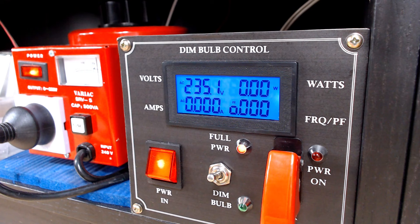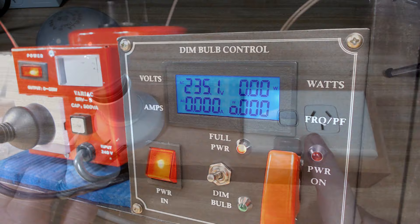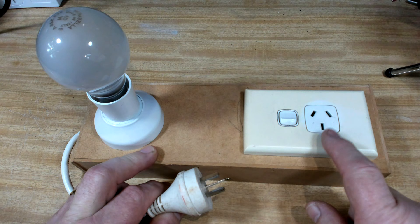I get quite a few questions about my dim bulb control. Did I buy it? Did I make it? Well, I'll tell you now I made it. This is a generational thing. It started off very simply and this is my first one here and it consists of a plug, a light bulb in a socket and an outlet.